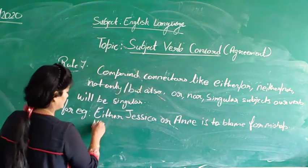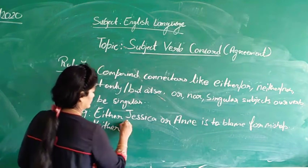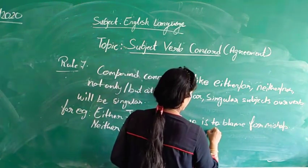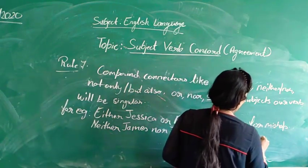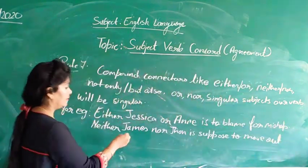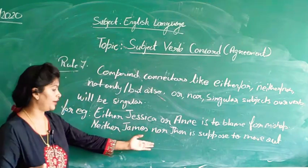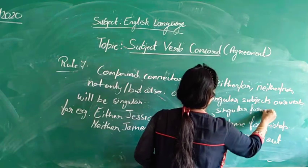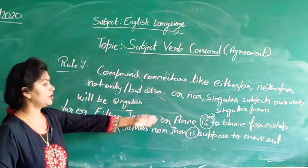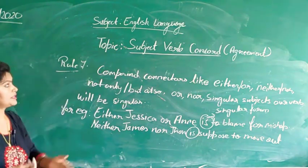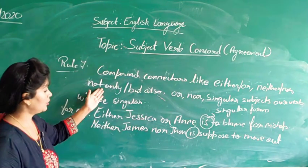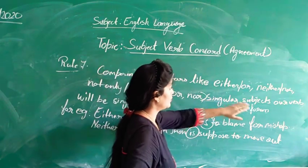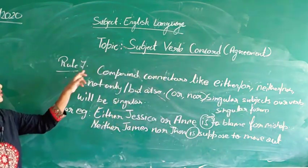Similarly, if we use neither/nor, we again have two subjects, but neither/nor gives us a choice. So our verb will be in singular form. If you write 'Either Jessica or Annie are to blame for the mishap,' that is incorrect. Compound connectors like either/or, neither/nor, not only/but also, or even 'or' and 'nor' alone — when singular subjects are used, the verb will be singular.